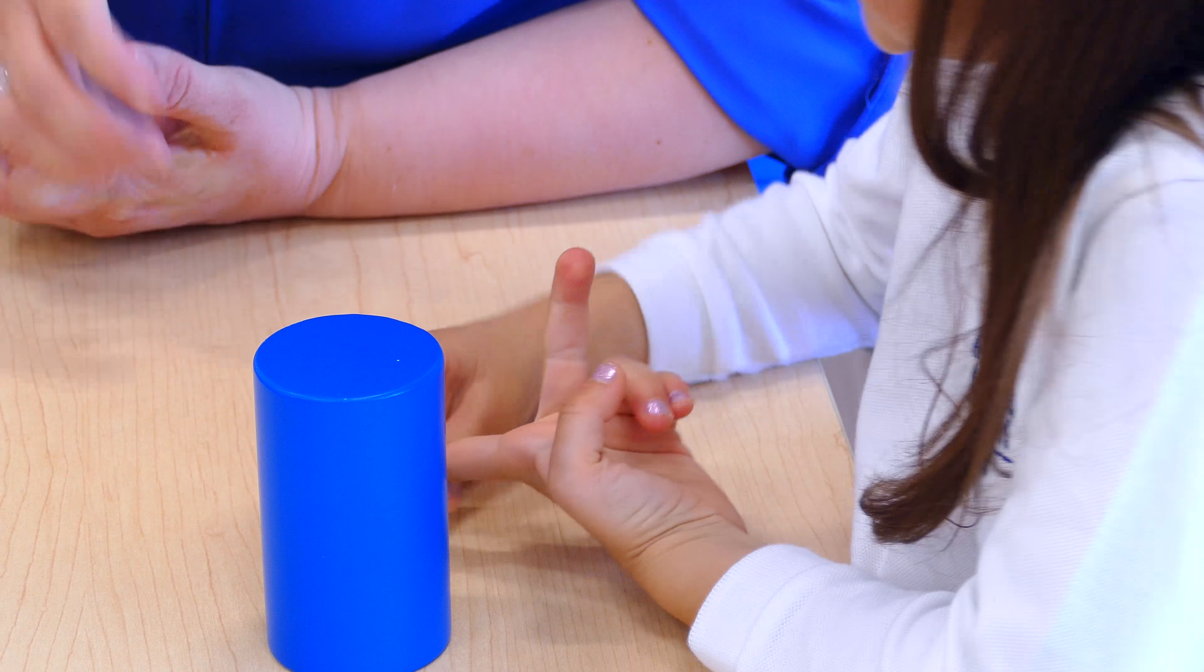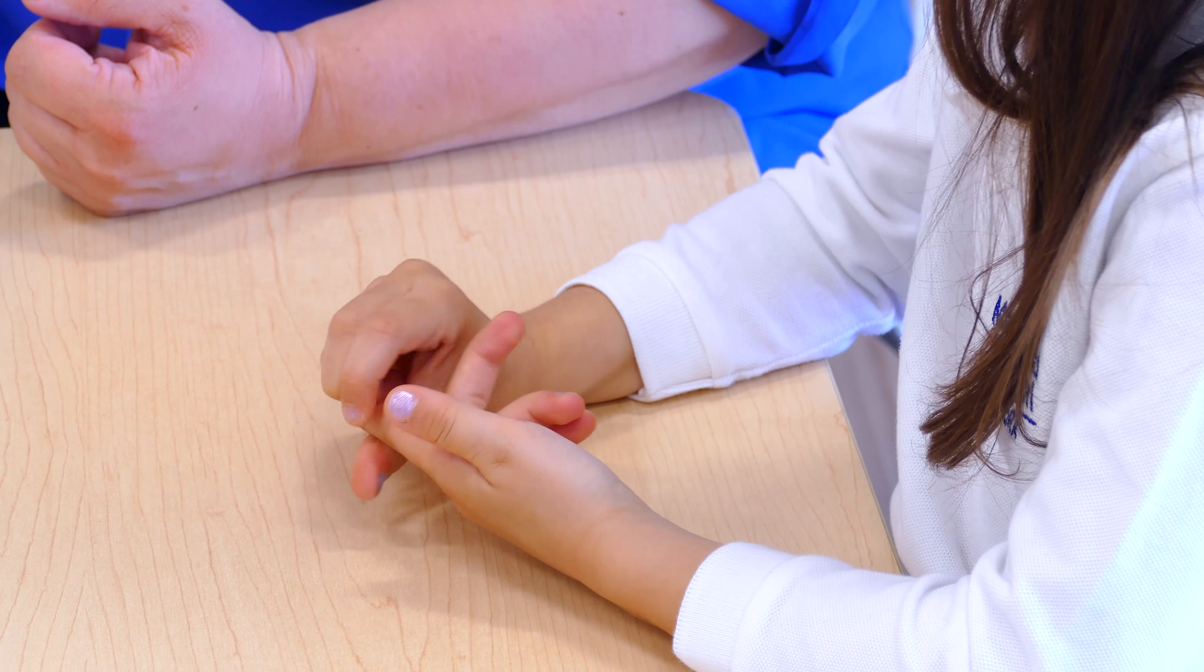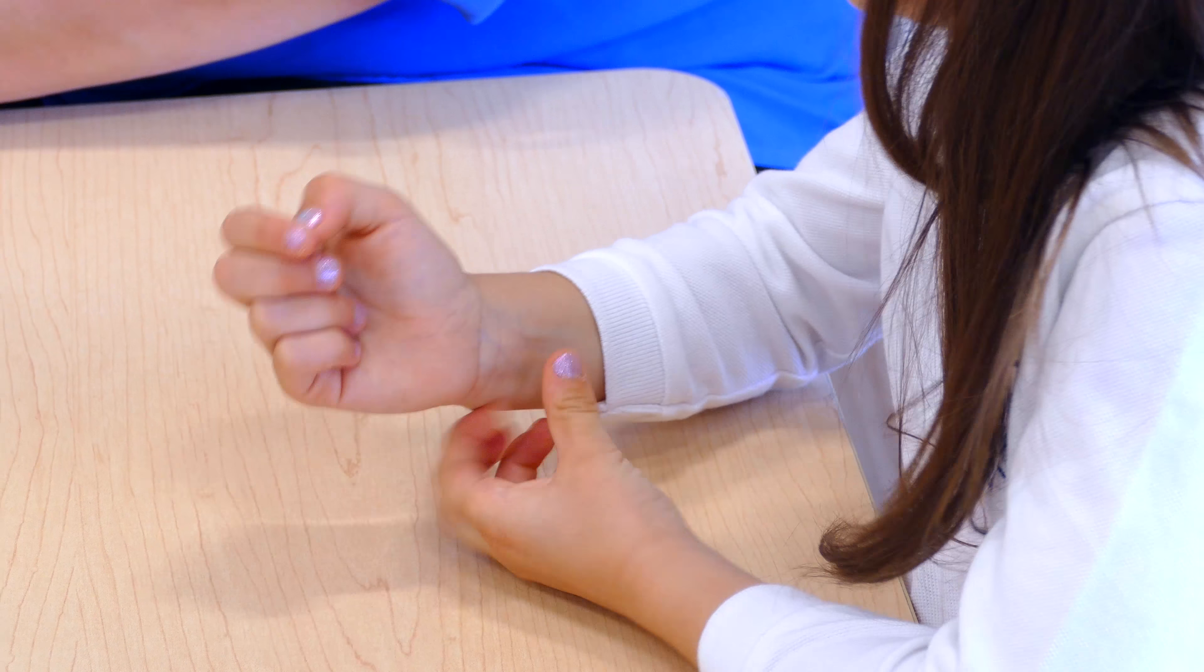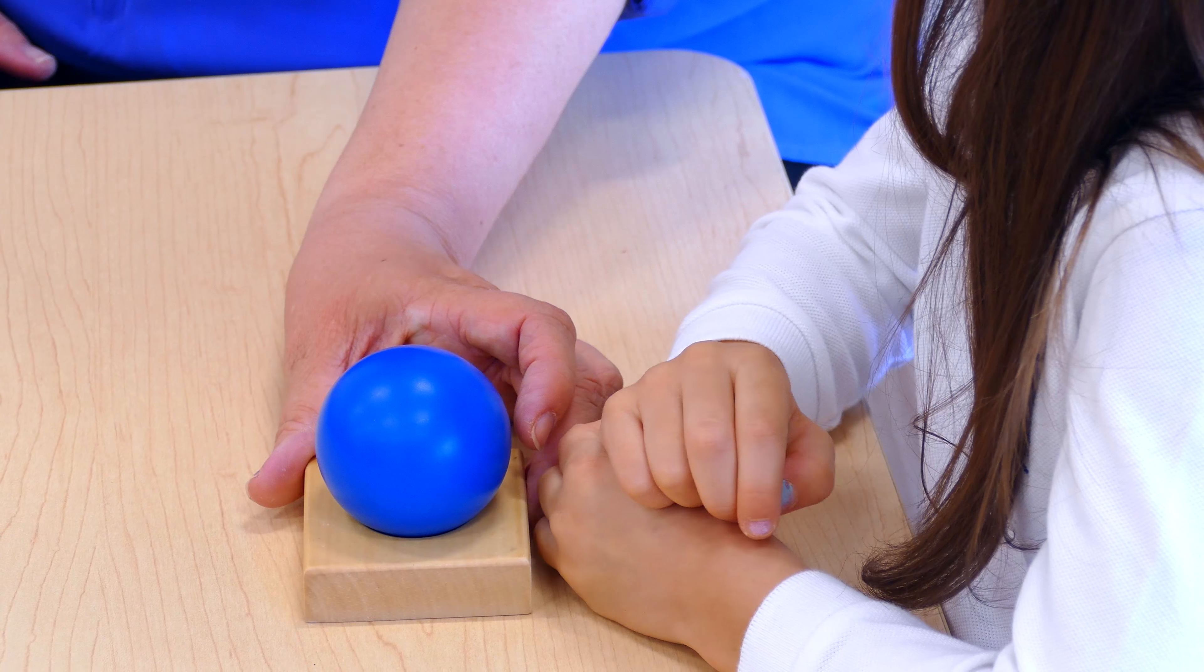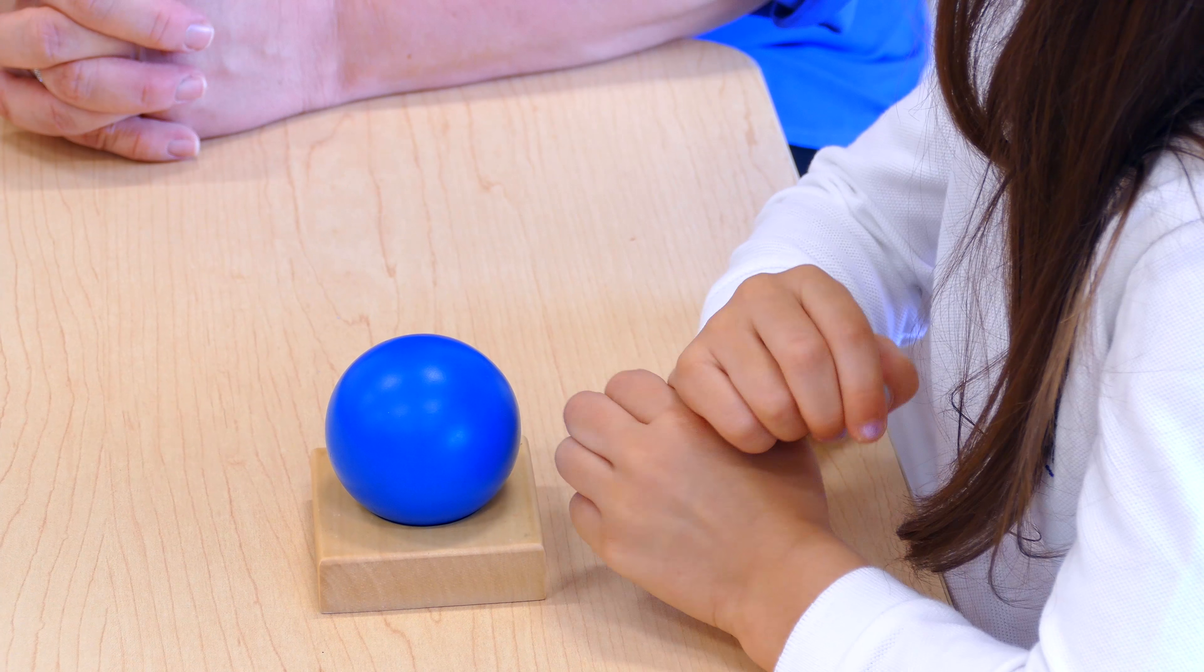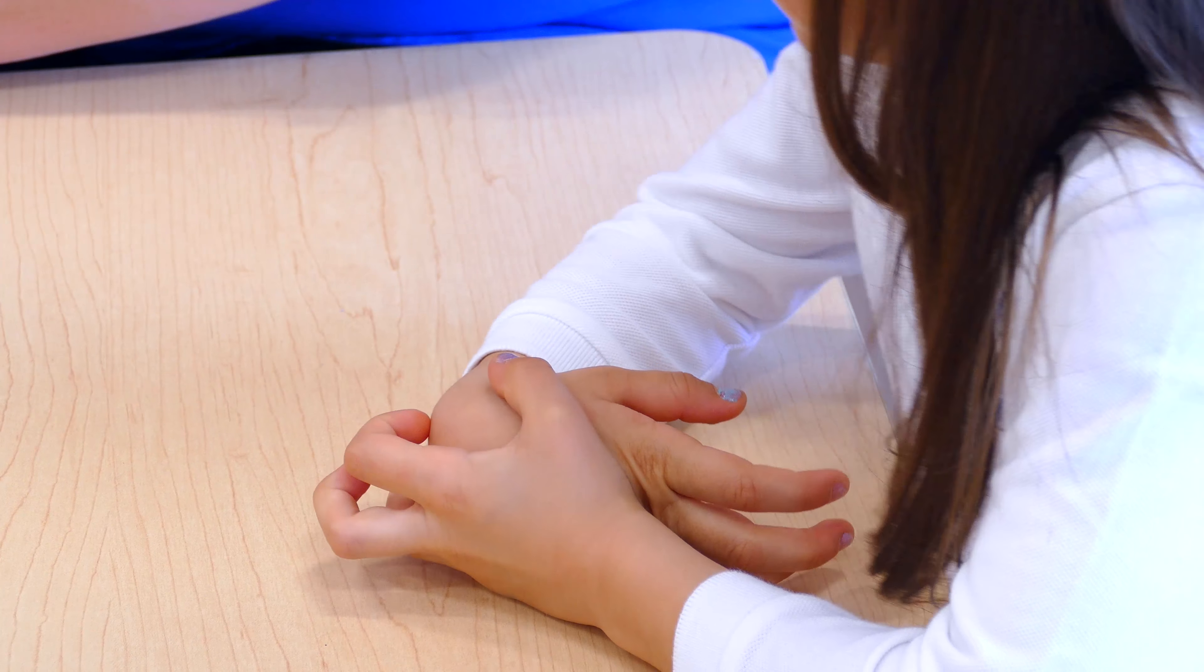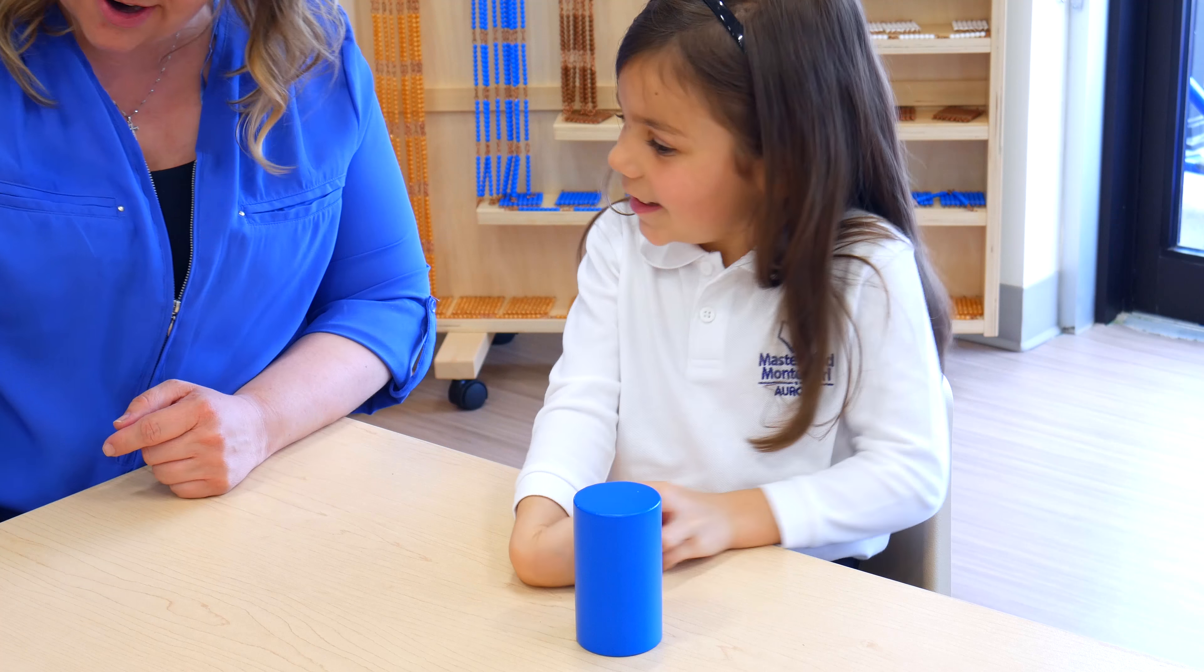This is a cube. Let's pick it up and feel it. See if it feels different to the sphere. Does it feel different? It does. It's still smooth, right? But this has edges and vertices.